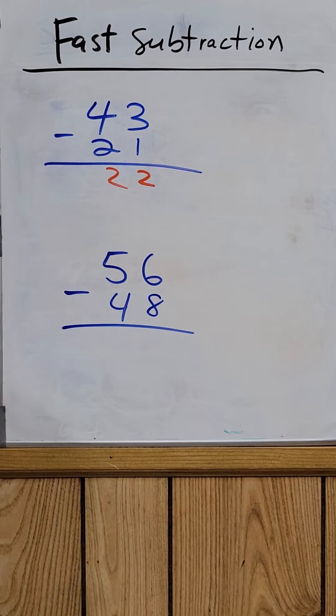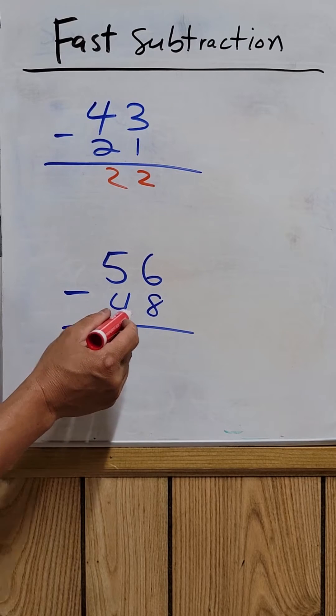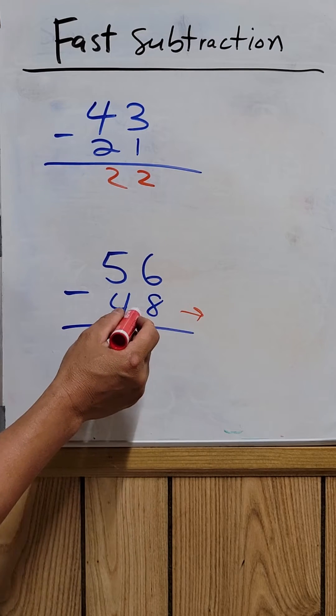But the example number two is a little harder to do because you have to use the borrowing method. So this is the easier way to do it. You look at the bottom number right here, so 48, you just round it up to 50, and the top number just leave alone, 56.